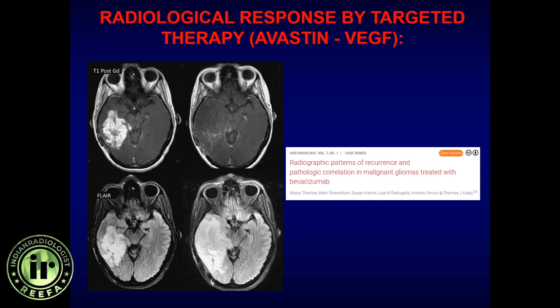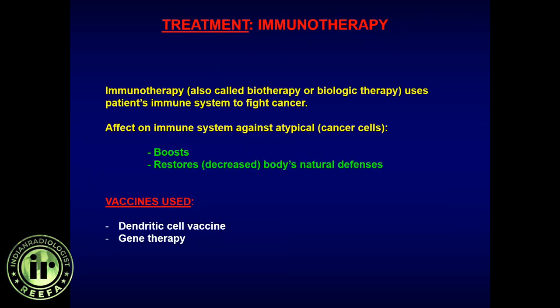Additionally, once a patient is started on Avastin, they are excluded from many clinical trials, limiting access to new research medications. Here is a patient started on Avastin — the GBM appeared to intensely involute and almost disappear, but this was actually a pseudo-response. Looking carefully, the tumor had actually progressed overall before and after treatment.